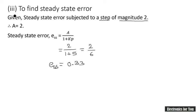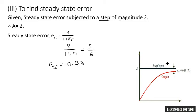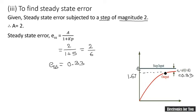Looking at the graph, ESS = 0.33, assuming an exponential output. The output may be oscillatory, but ultimately it stabilizes, and ESS at the end will be 0.33. Since the input magnitude is 2 and ESS is 0.33, the output stabilizes at 2 − 0.33 = 1.67. In this way we can calculate all the required quantities.